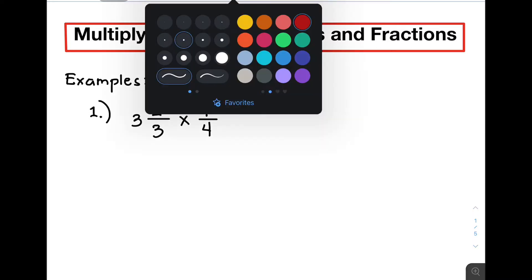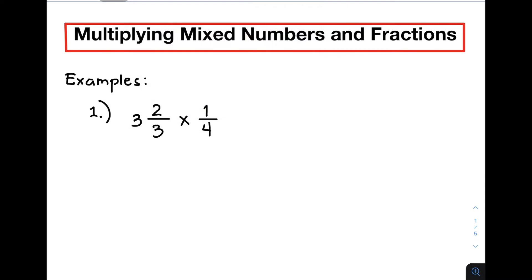Basically, we are converting a mixed number this way. First, your whole number, 3, you need to multiply it by your denominator, which is 3 times 3, that will give you the answer of 9. And then, their product, 9, must be added to 2. So, 9 plus 2, that is equal to 11.